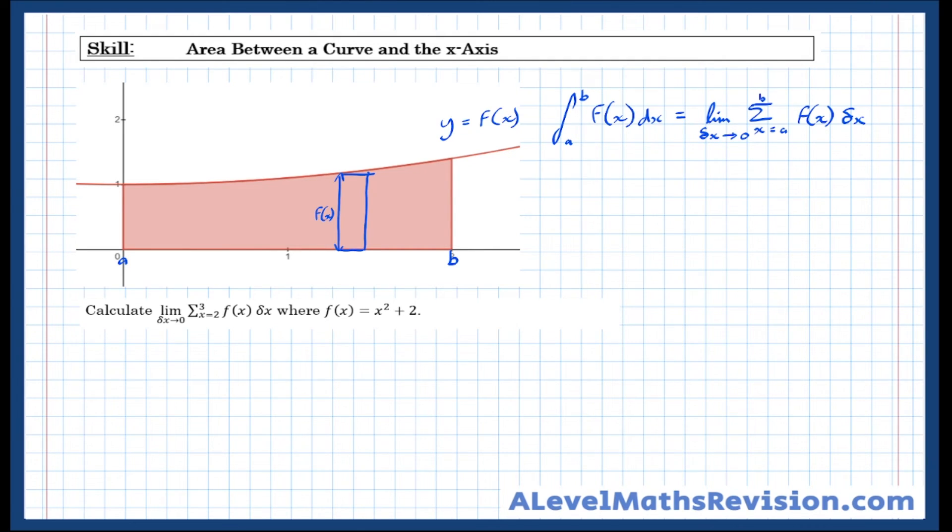Well, we know from what we've just learned that this notation means integration. That's actually asking us to sum all the infinite number of rectangles infinitely thin between 3 and 2 of x squared plus 2 with respect to x.